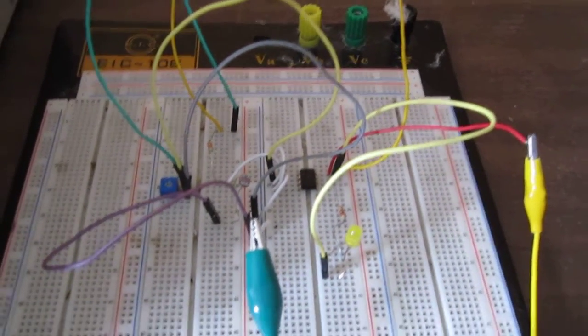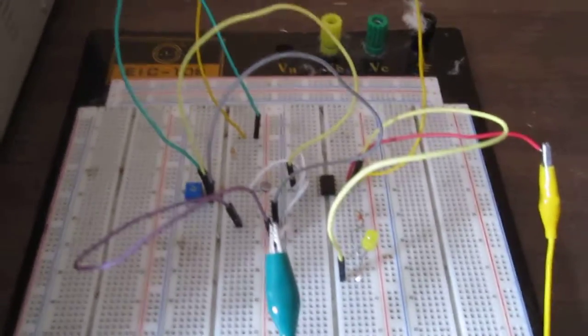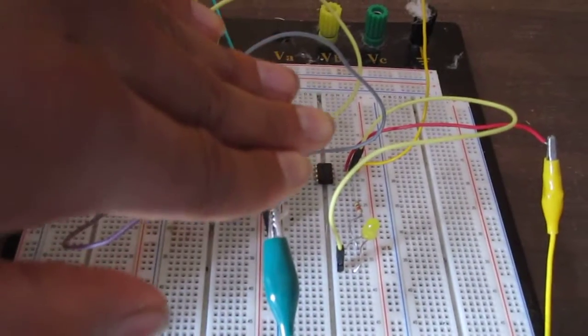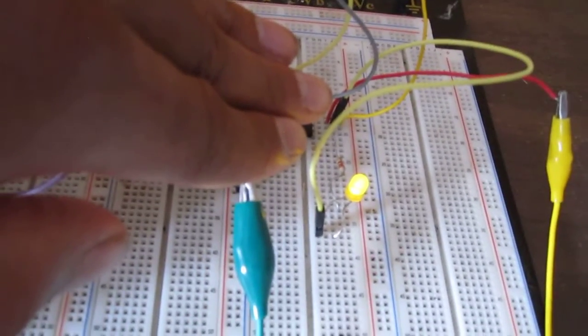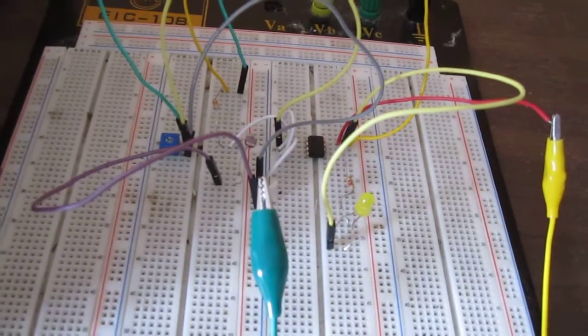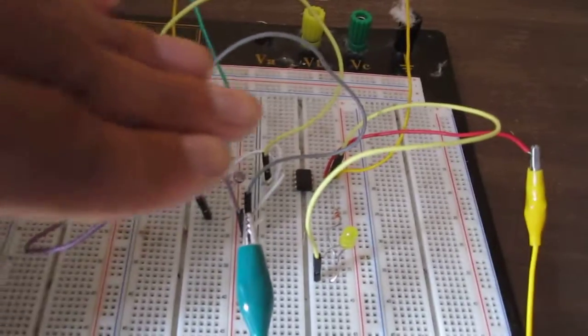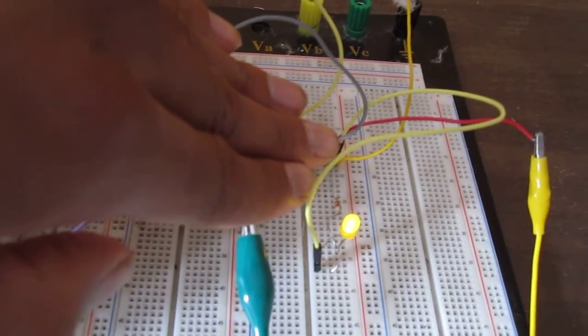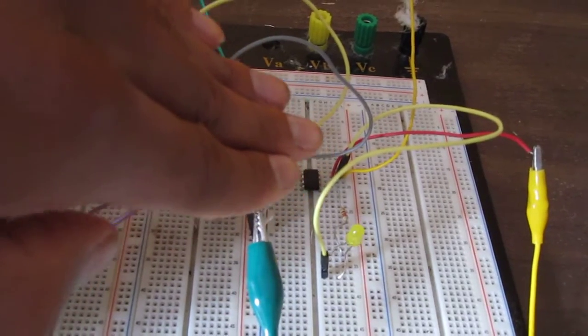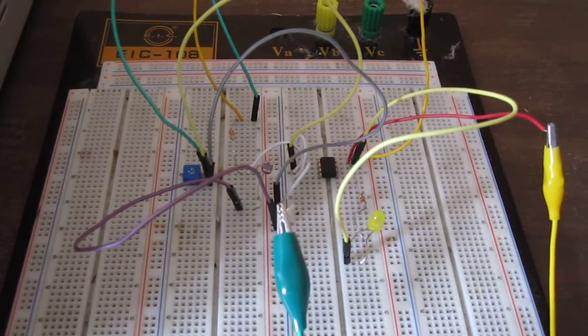To demonstrate this circuit, I'm going to put my hand over the photoresistor, and you can see that it turns on. If I remove my hand, it turns off. If I put my hand back, it turns on. This is how the LM311 chip functions as a voltage comparator to act as a nightlight circuit.